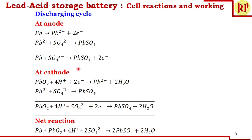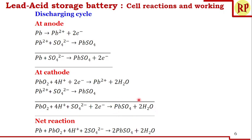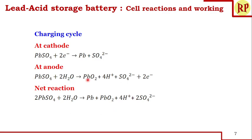At the anode during discharging, the reaction Pb + SO₄²⁻ → PbSO₄ + 2e⁻ is reversed during charging to: PbSO₄ + 2e⁻ → Pb + SO₄²⁻. Here it is gaining electrons, so the lead electrode, which was the anode in discharging, acts as the cathode during charging. Similarly, the cathodic reaction is also reversed: PbSO₄ + 2H₂O → PbO₂ + 4H⁺ + SO₄²⁻ + 2e⁻. Here electrons are released, so the cathode in discharging acts as the anode during charging.